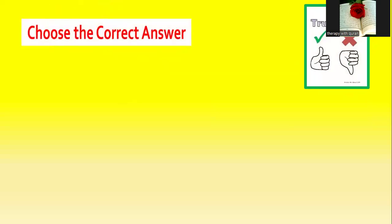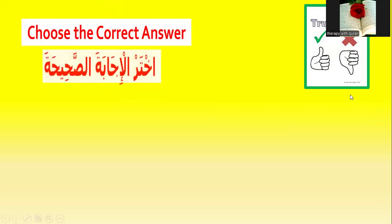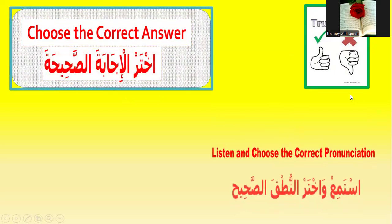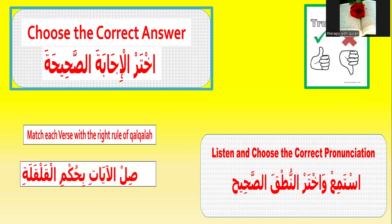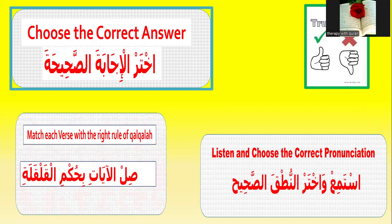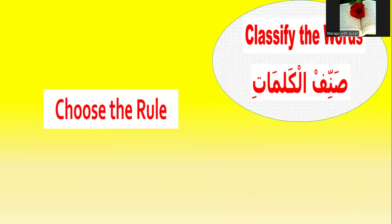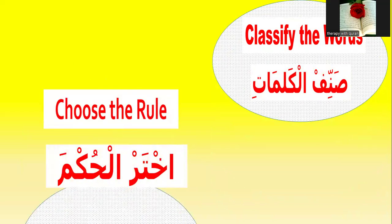The first group is true or false. The second group is choose the correct answer. The third group is listen and choose the correct pronunciation. The fourth group is match each verse with the right rule of qalqala. The fifth group is classify the words. Group number six is choose the rule.